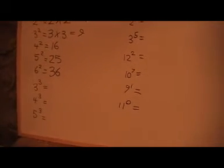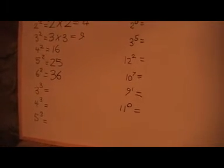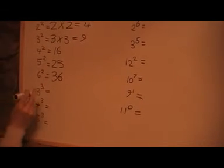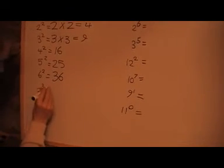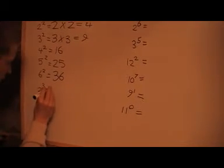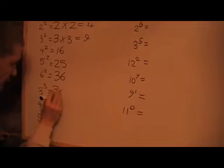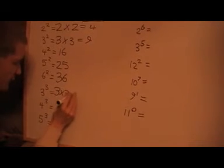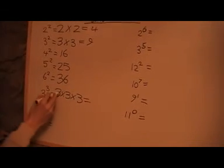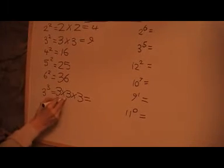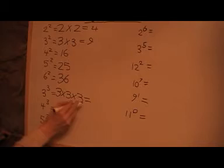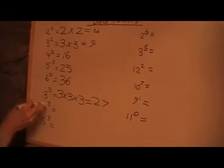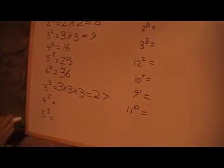Now, if we cube a number, that means we're multiplying the number by itself 3 times. So if I've got 3 cubed, I've got 3 times 3 times 3. 3 times 3 is 9, times 3 is 27. So 3 cubed is 27.